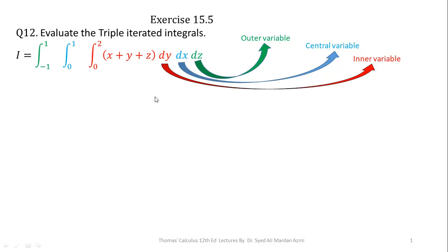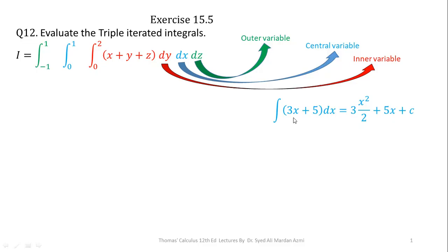So after this, we are able to start the process of integration. Before starting, let us revise an example from single variable calculus. If we have to integrate 3x plus 5 with respect to variable x, then the integration is 3x squared over 2 plus 5x plus C. In this integral we have two terms, each with a different type of constant: the constant 3 is multiplied with a variable term, whereas the constant 5 is added to a variable term.